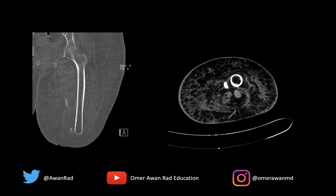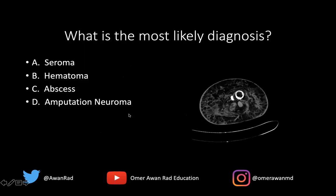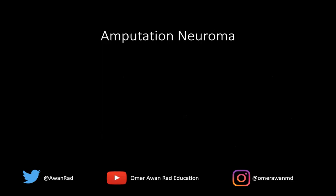We also have diffuse atrophy of the musculature here, some skin thickening and subcutaneous edema. But really the important thing is that we have this fusiform thickening in the region of where we expect the sciatic nerve to be in a patient that's had an amputation. So the most likely diagnosis here would be an amputation neuroma, based on the history that you should have inferred and deciphered.